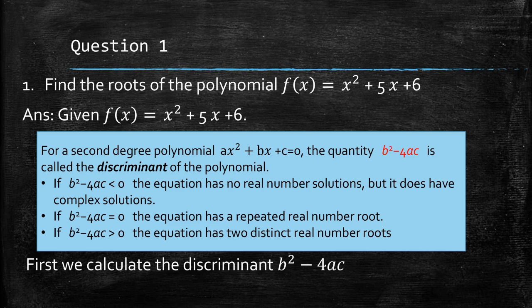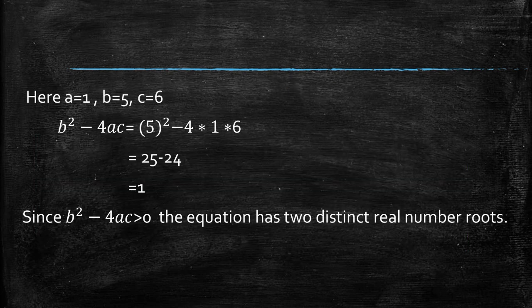We know that for a second-degree polynomial ax² + bx + c = 0: if the discriminant b² - 4ac = 0, then the equation has one root; if b² - 4ac < 0, it has no real roots; and if b² - 4ac > 0, it has two distinct real roots. Here, for x² + 5x + 6 = 0, a = 1, b = 5, c = 6. Then b² - 4ac = 25 - 24 = 1, which is greater than 0, so the equation has two distinct real roots.